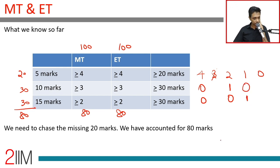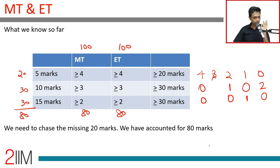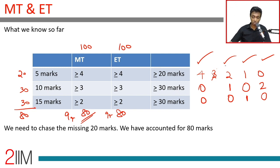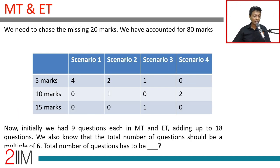Or one five-mark question plus one fifteen-mark question (5+15=20), or zero five-mark questions and two ten-mark questions. These give exactly four possibilities for the additional questions: (4,0,0), (2,1,0), (1,0,1), or (0,2,0) in terms of extra fives, tens, and fifteens. Combined with the base nine questions accounting for 80 marks, these are all the valid distributions.